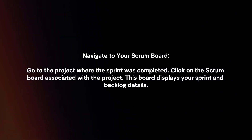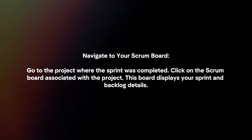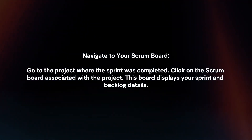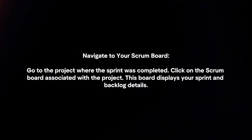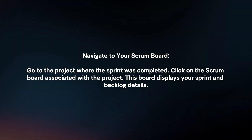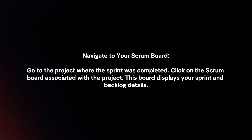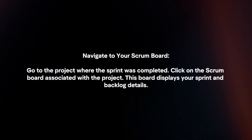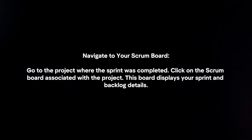Navigate to your Scrum board. Go to the project where the Sprint was completed, and click on the Scrum board associated with the project. This board displays your Sprint and backlog details.